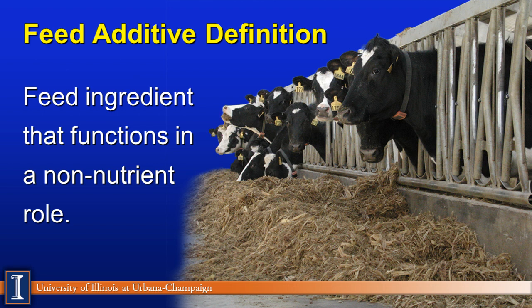What is a feed additive by definition? Very simply, it is a feed ingredient that functions in a non-nutrient role. The best example is sodium bicarbonate. Bicarbonate is a rumen buffer, while sodium is a nutrient. So some products wear dual hats — they may have a nutrient associated with them but also have another function beyond meeting, say, a sodium requirement.